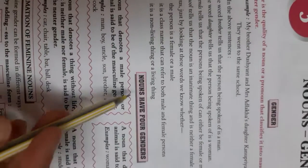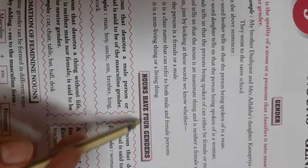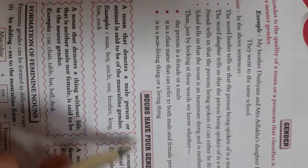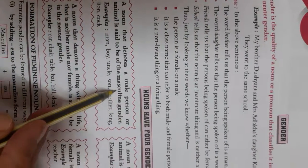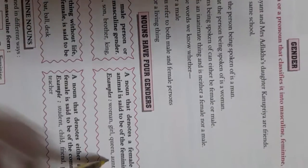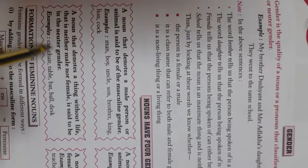So there are four kinds of gender. Nouns have four genders: masculine, feminine, neuter, and common gender.